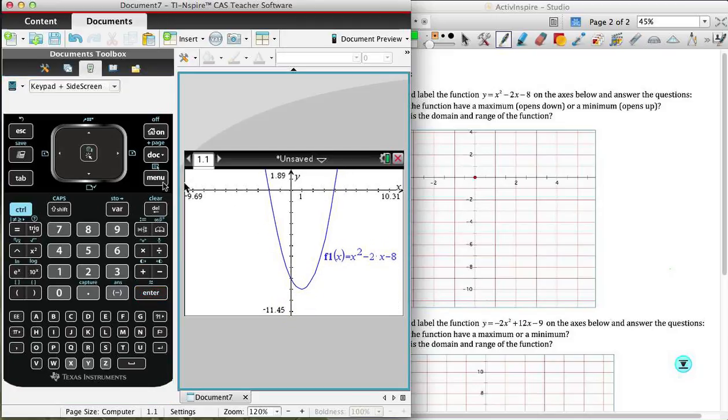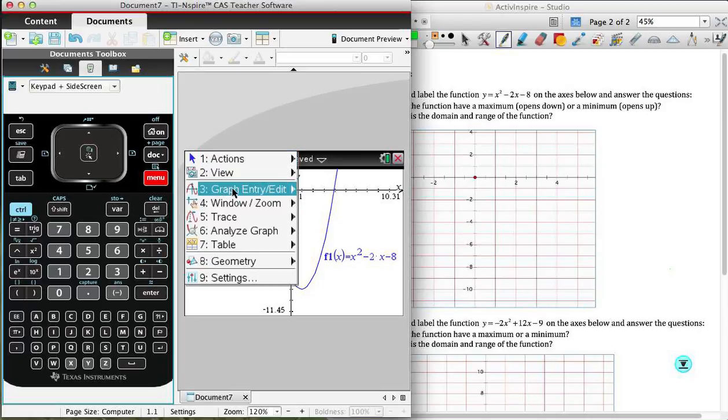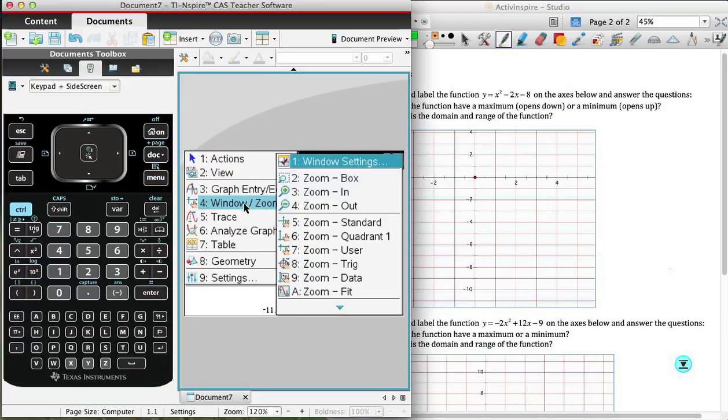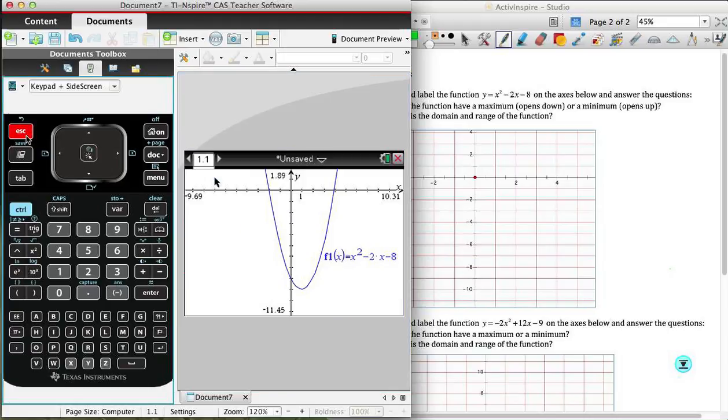You could, of course, do that in the menu under the window settings or the zoom out as an alternative to what I just did. Okay. So now what we're looking for are key points. We need the coordinates of our vertex. We need our y-intercept, and we need our x-intercepts.